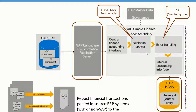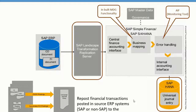Central finance provides a tool called AIF — Application Interface Framework — which helps you with error handling for your data replication. The initial load can also be monitored, and you can do day-to-day monitoring of real-time data replication. All postings from the source system get replicated and go into the SAP Universal Journal, which helps you keep your data centralized and do your financial reporting.